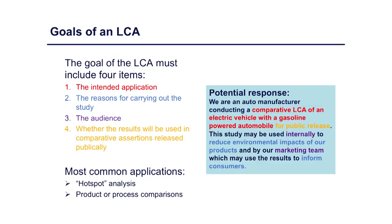Each of those four elements is included: the intended application is a comparative LCA of two vehicles; the reason is to reduce environmental impacts; the audiences are internal staff who can change production processes, as well as the marketing team. The fourth element — whether results will be used in comparative assertions released publicly — must be stated candidly to be ISO compliant. The goals of the LCA also require coming up with an appropriate functional unit for comparison. What are the units of comparison? For two vehicles, perhaps we compare per car, or per passenger mile traveled.